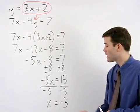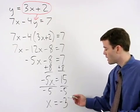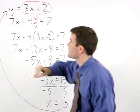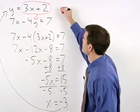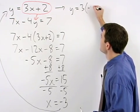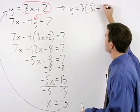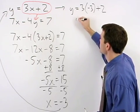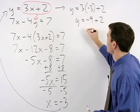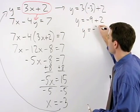To find y, plug a negative 3 back in for x in the first equation to get y equals 3 times negative 3 plus 2, which simplifies to y equals negative 9 plus 2, or y equals negative 7.